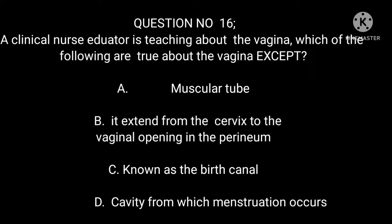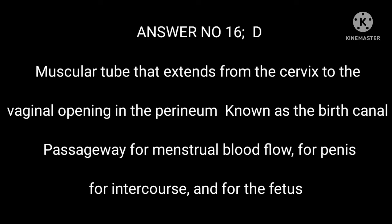Question number 16. A clinical nurse educator is teaching about the vagina. Which of the following are true about the vagina except: A. Muscular tube. B. It extends from the cervix to the vaginal opening in the perineum. C. Known as the birth canal. D. Cavity from which menstruation occurs. Answer number 16: D. The vagina is a muscular tube that extends from the cervix to the vaginal opening in the perineum, known as the birth canal and passageway for menstrual blood flow, for penis during intercourse, and for the fetus.